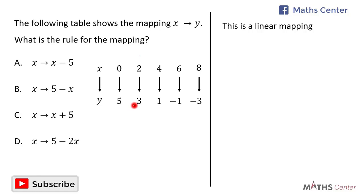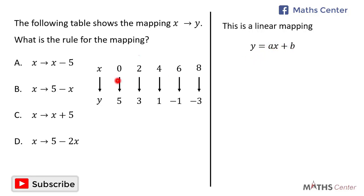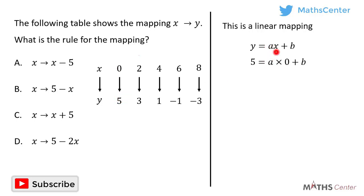If this is a linear mapping, then the rule is of the form y is equal to ax plus b, where a and b are constants. We will pick two sets of values from the mapping and substitute them into the equation to find the values of a and b. I'll begin with x equal to 0 and y equal to 5.